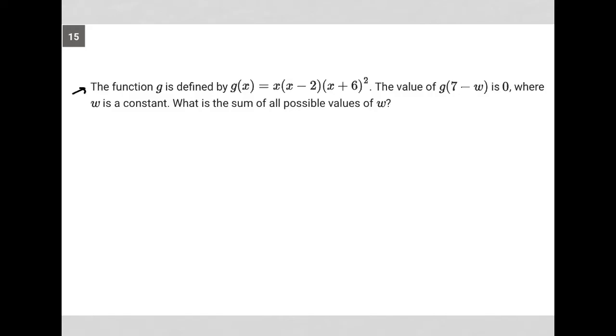This question says the function g is defined by g(x) = x(x - 2)(x + 6)². The value of g(7 - w) is 0, where w is a constant. What is the sum of all possible values of w?